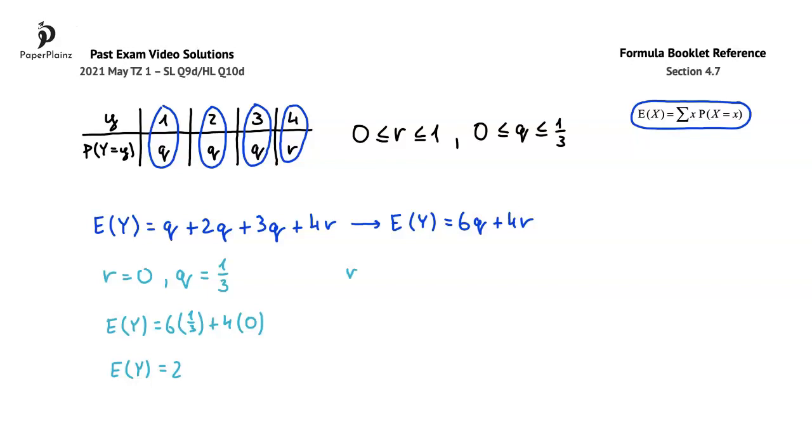The other extreme case is when R is 1 and Q is 0. In this case, for EY, we get 6 times 0 plus 4 times 1, so here EY is 4. 2 and 4 are our two extreme values for the range of EY, therefore we can write that EY is between 2 and 4.